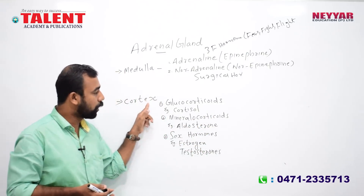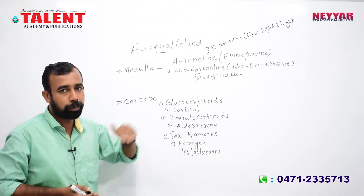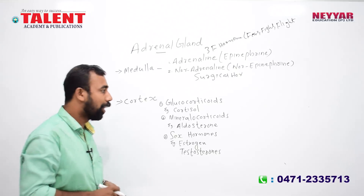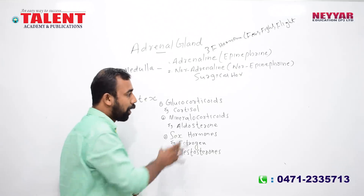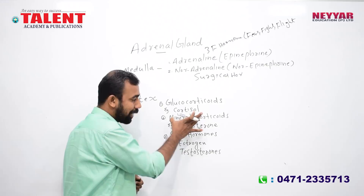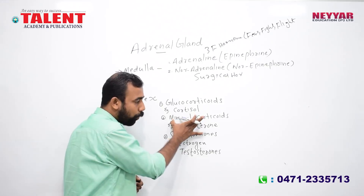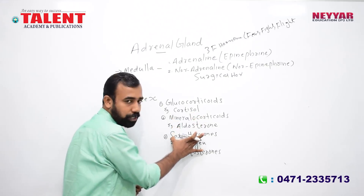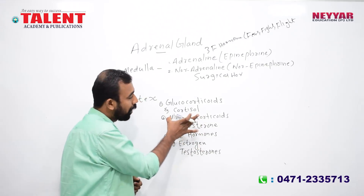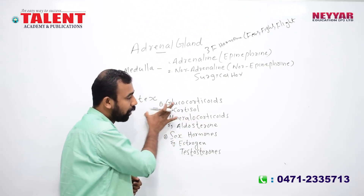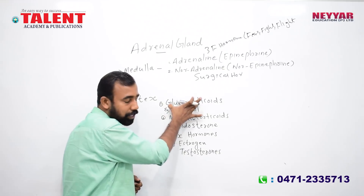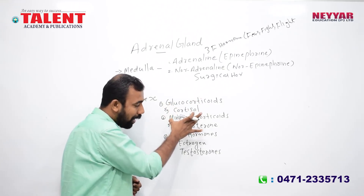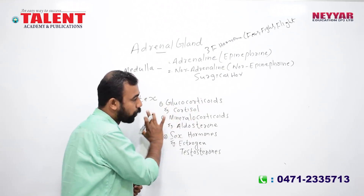There are three hormone groups of the cortex. The first is glucocorticoids. The second hormone is mineralocorticoids. The third is sex hormones. These are the three hormone groups of the adrenal cortex.